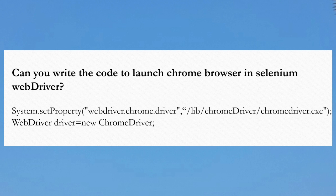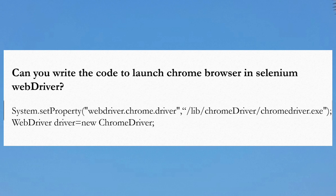The next question is: can you write a piece of code to open or launch Chrome browser in Selenium WebDriver? We can open a new Chrome browser using the following syntax. You write System.setProperty and pass the parameter "webdriver.chrome.driver" along with the location path where you have installed the ChromeDriver executable file. Then you create the object: WebDriver driver = new ChromeDriver(). This statement launches a new Chrome browser in Selenium WebDriver.